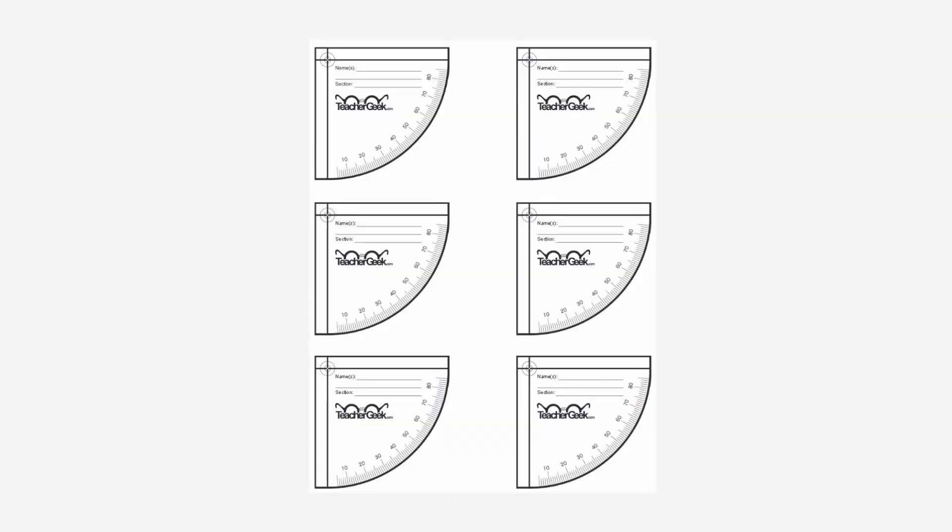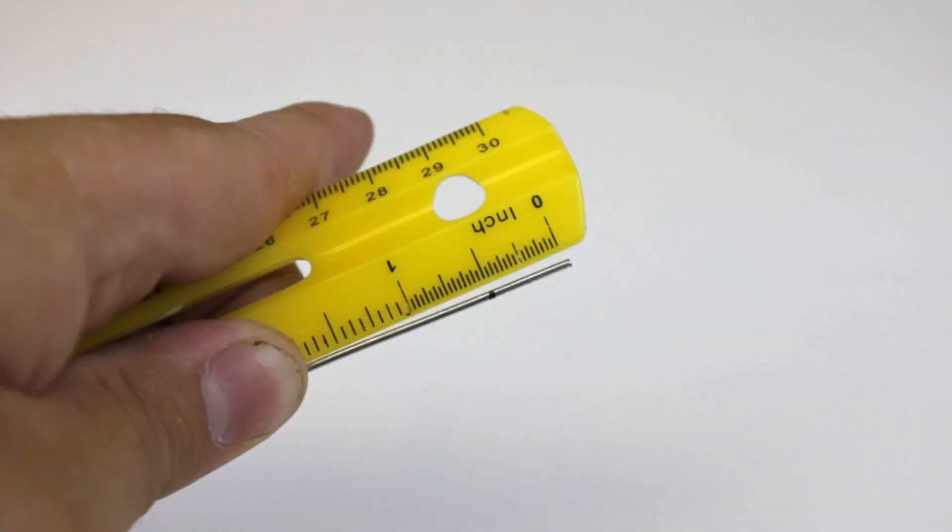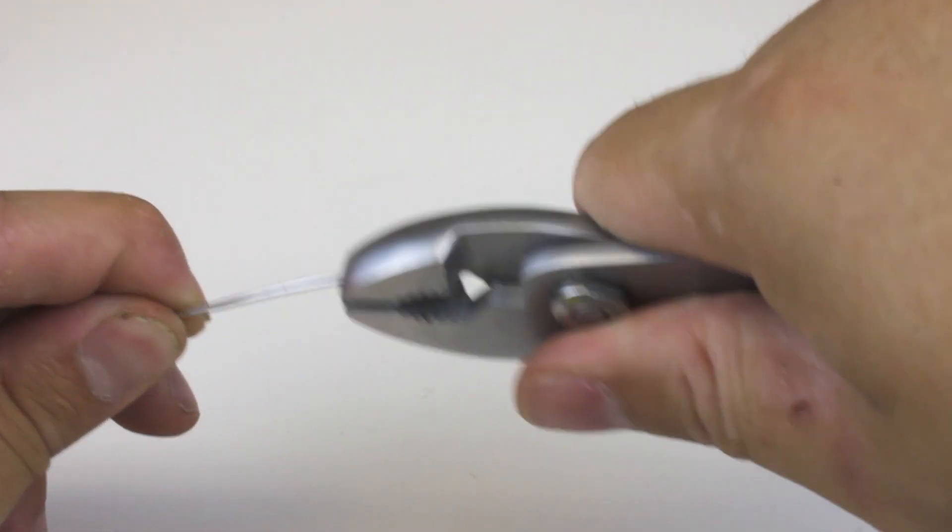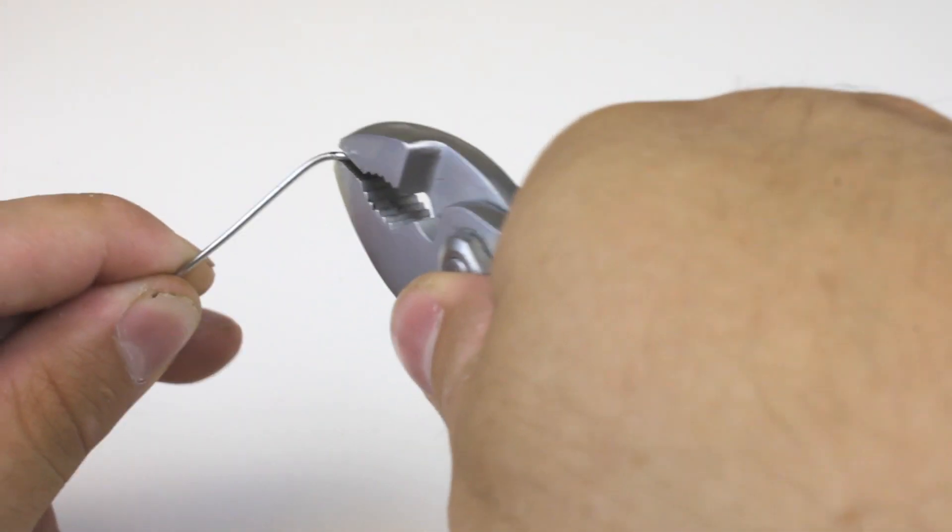Download and print the launcher protractor from the Teacher Geek website, and use scissors to cut it out carefully. Place the mark 12 millimeters down, which is about half an inch. Take your pair of pliers and place them on the half inch mark, and then bend over your wire.